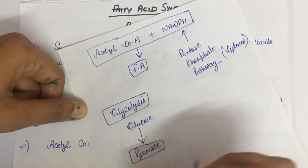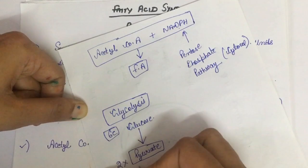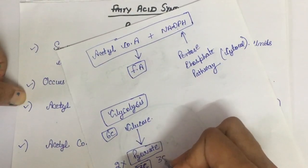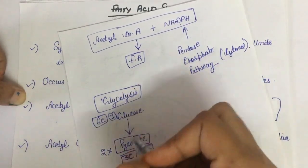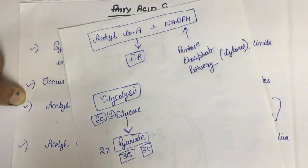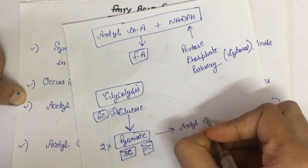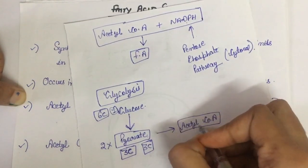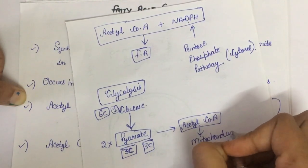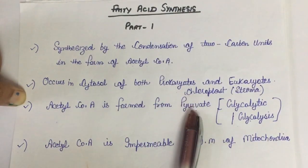Glucose is split into pyruvate. Glucose is a six carbon molecule and from it we get two pyruvate molecules, each being a three carbon molecule. This pyruvate later on forms acetyl coenzyme A, and this formation of acetyl coenzyme A occurs in the mitochondria.